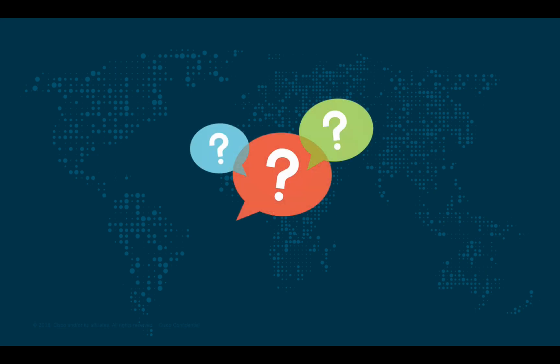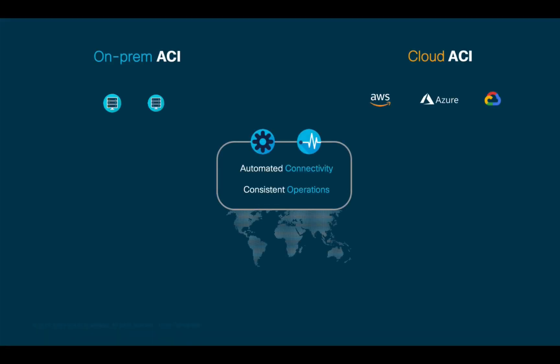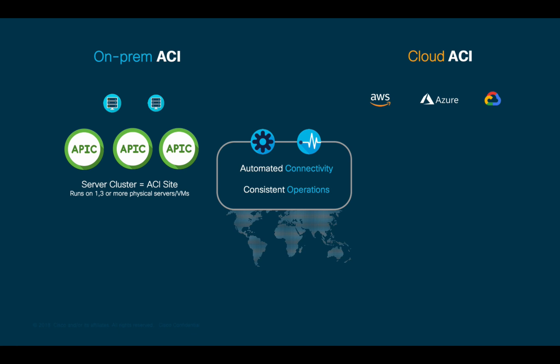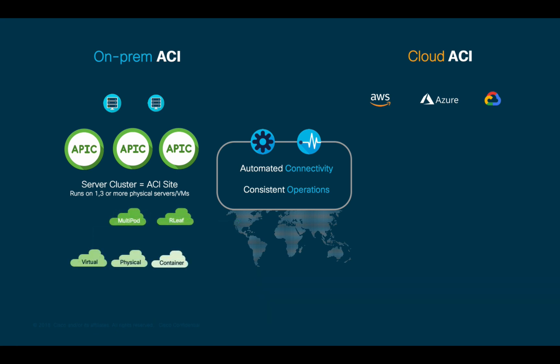But before we get started with step-by-step configurations in each cloud, let's briefly cover how Cloud ACI works by comparing it to the on-premises version. Let's start with the APIC. If you remember, the APIC can be one, three, or more physical servers, or a mixture of physical servers and VMs for small environments. Each APIC cluster represents an ACI site, which consolidates the management of multiple spine and leaf nodes running in a single-pod or multi-pod configuration. APIC provides a single GUI, CLI, or RESTful API, and may integrate virtual and container networking as well.